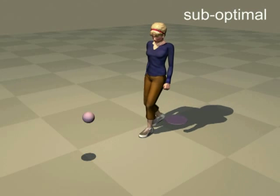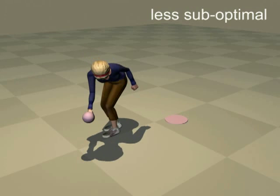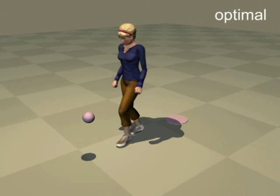In this example, the first solution reaches too far. The second solution reaches from the side. The optimal solution has a natural posture.